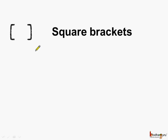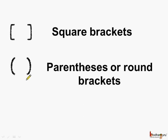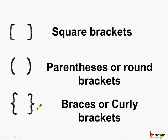So this is square brackets. This is parenthesis or round brackets. These are called braces or curly brackets. These are the three different types of brackets which are used in an expression when we are solving different operations, and we use a different order to solve them.